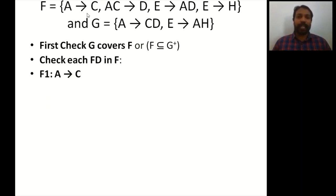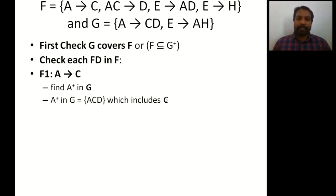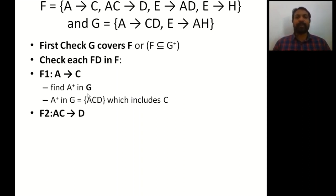A closure in G: starting with {A}, applying A→CD from G gives {A, C, D}. No further dependencies apply. So A+ in G = {A, C, D}. Since C is in {A, C, D}, the dependency A→C is covered by G. Next, take AC→D: compute AC closure in G. A→CD applies since A is a subset of {A, C}, giving {A, C, D}. Since D is in {A, C, D}, the dependency AC→D is covered by G.